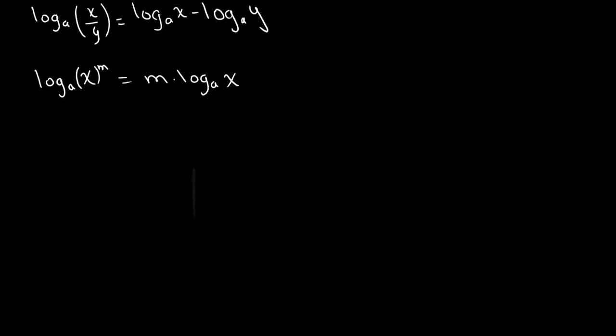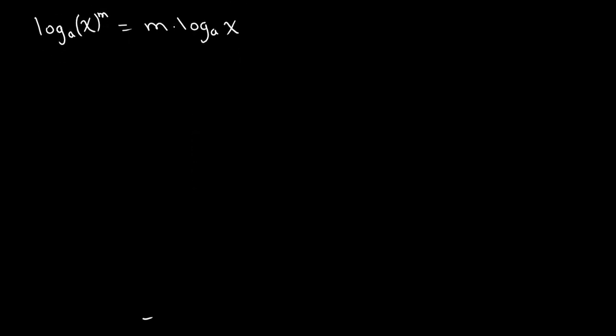For our first example, let's say that we have lg of 5x, and we're subtracting lg of x minus 4, and this expression is equal to 1. So like I said earlier, when we're solving expressions involving logarithms, essentially what we want to do is we want to recognize the logarithmic laws and apply them. So over here, right away, we see we have two logarithms, both with the same base. They're both lg, so they're both base 10.